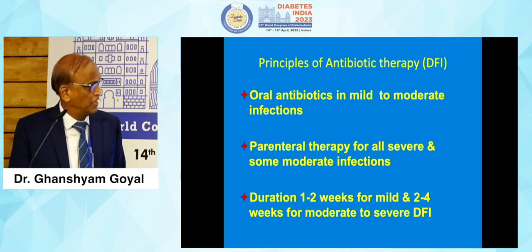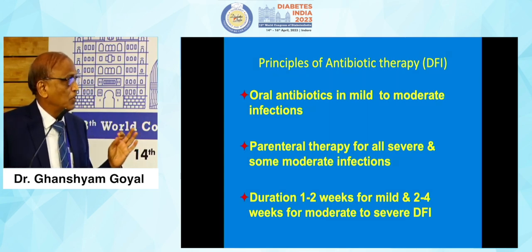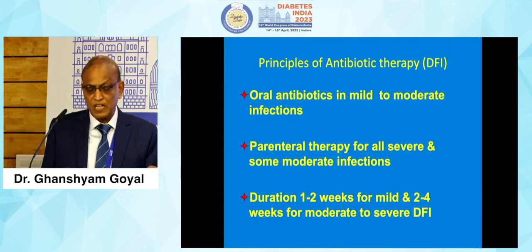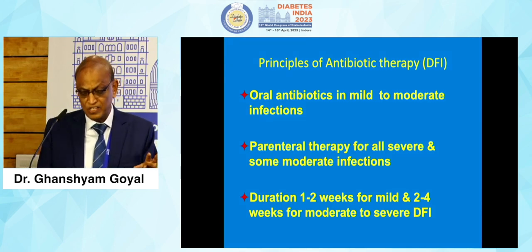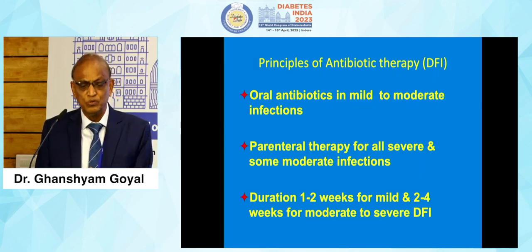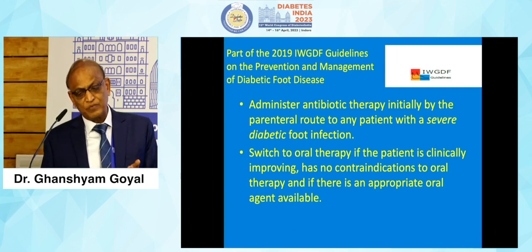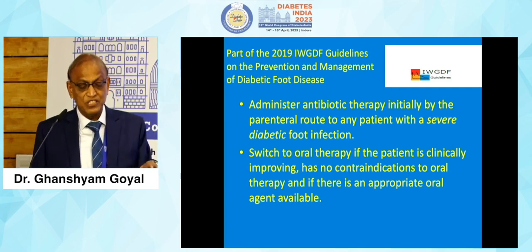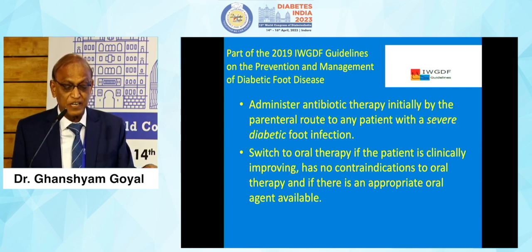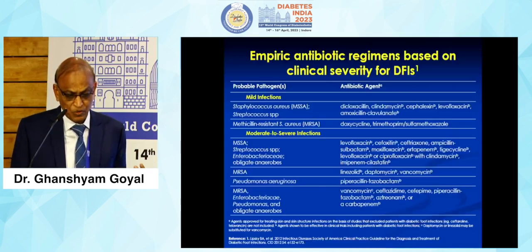What are the principles of diabetic foot antibiotic therapy? Oral antibiotics for mild to moderate infections. Parenteral therapy for all severe and some moderate infections. Duration ranges from 1 to 2 weeks for mild, and 2 to 4 weeks for moderate to severe infections. According to International Working Group on Diabetic Foot Guidelines, administer antibiotic therapy initially by the parenteral route for any patient with a severe diabetic foot infection, then switch to oral therapy if the patient is clinically improving and able to tolerate orally.